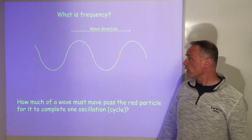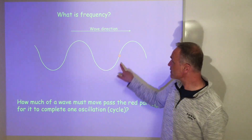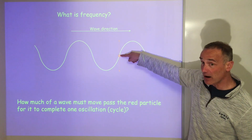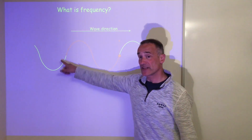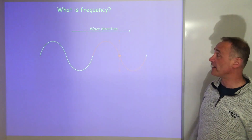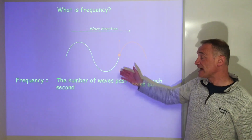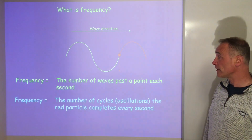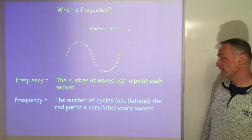So what about frequency? I want to explain this by looking at this animation here. I want to know how much of a wave must pass this point for it to do one oscillation — which would be up to the top, back to there is half an oscillation, down to there and back again. As that wavelength passes through, that point goes down, it's now gone back — that's half a cycle. It now goes back up to the top and back down — that is one cycle. The frequency is the number of waves past a point every second, or the number of cycles every second.